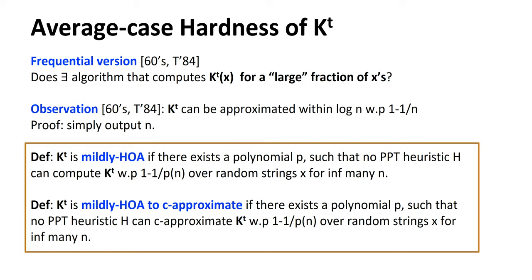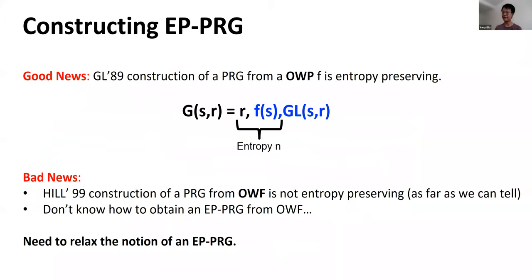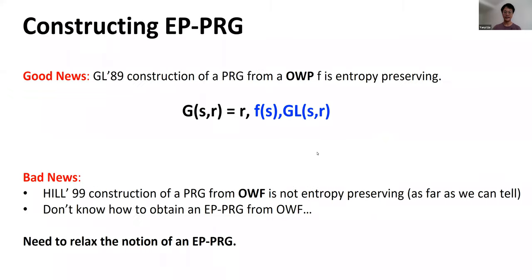Another question: in the proof of Theorem 2, if you had a one-way permutation that would already be enough to imply KT is mildly hard on average using the Goldreich-Levin construction. Did you consider whether any strengthening of KT implies a one-way permutation? Yes, we did consider this but didn't get anywhere. We don't really know if KT hardness implies the existence of one-way permutations — we don't even know how to get a regular one-way function.